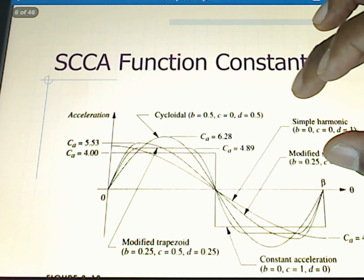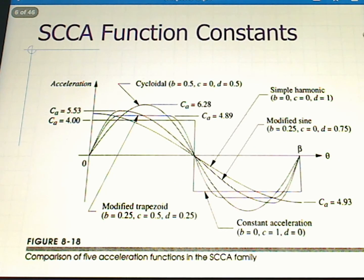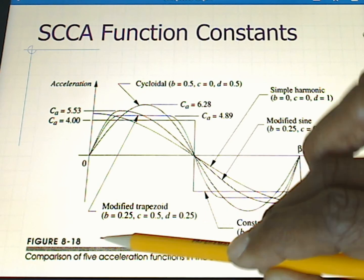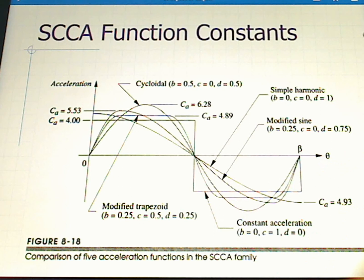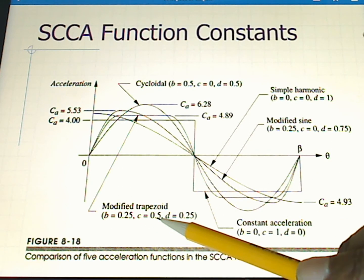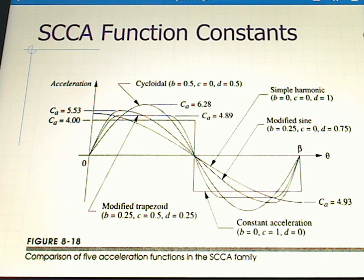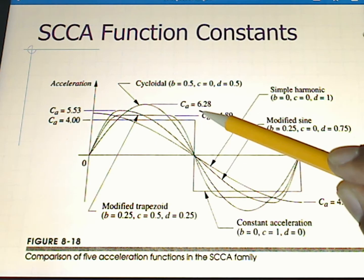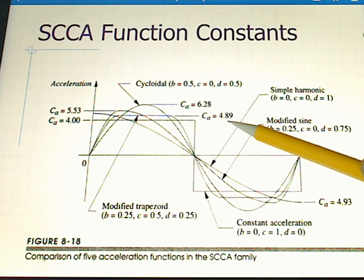If we go here, we'll see that, for example, on the acceleration curve, we see the modified trapezoid, the cycloidal, the modified sine, the simple harmonic, the constant acceleration - all members of the SCCA family. If we do indeed want to plot the modified trapezoid and use it for our position, velocity, acceleration, and jerk, we need to set B equal to 0.25, C equal to 0.5, and D equal to 0.25. The modified trapezoid is the one that is straight here, which gives us a CA for this particular curve of 4.89.